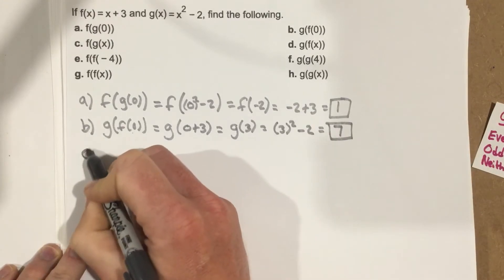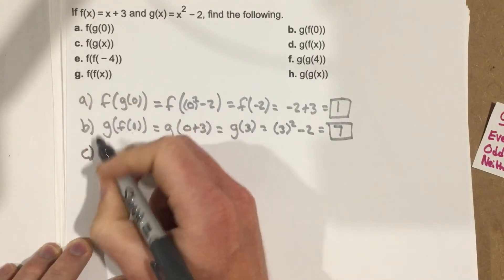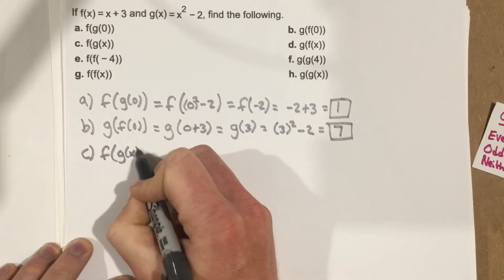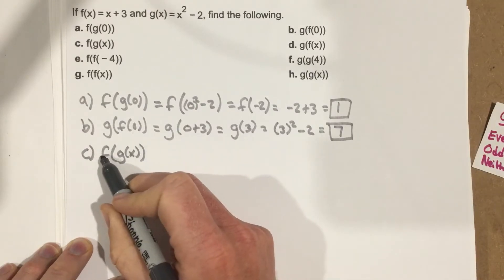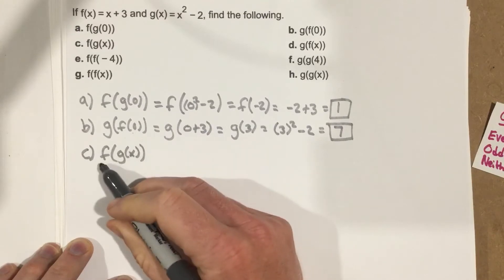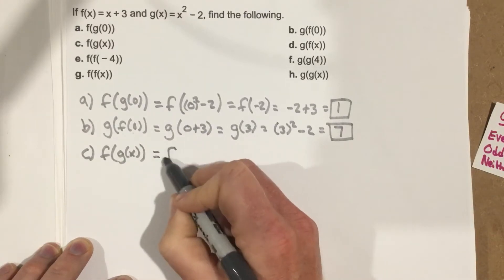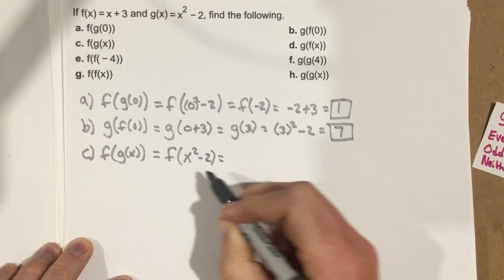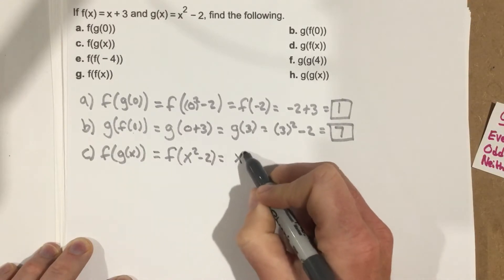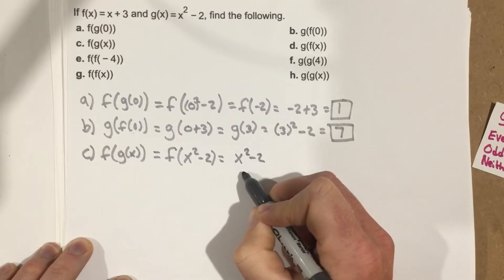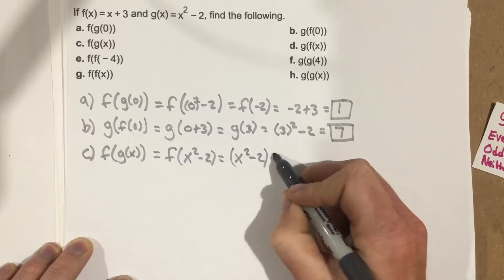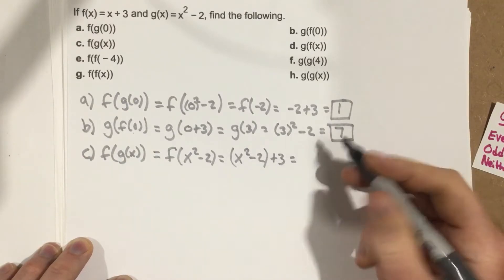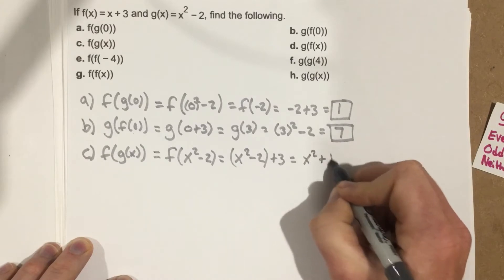Part c: f of g of x. We take the g function and plug it into f. So that's f of x squared minus 2. Plugging that in for x in the f function: x squared minus 2 plus 3, which combines to x squared plus 1.